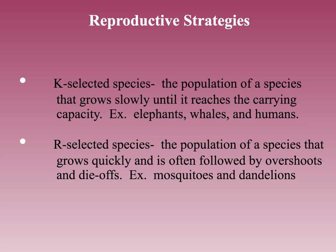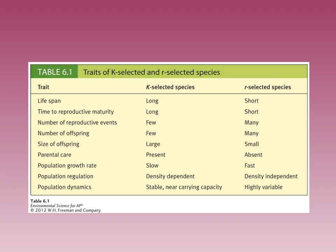Reproductive strategies — we're going to talk about K and R. K-selected species are populations that grow slowly until reaching carrying capacity, like elephants, whales, and humans. They do not tend to have many offspring. Typically they have large body size, reach reproductive maturity later, produce few large offspring, and provide parental care for their young. R-selected species are populations that grow quickly and are often followed by overshoots and die-offs, like mosquitoes, dandelions, rats, and cockroaches. They generally provide little parenting, are usually small, reach reproductive age quickly, and reproduce very frequently.